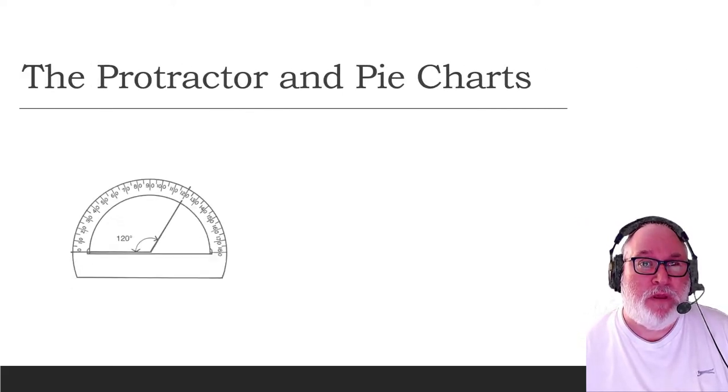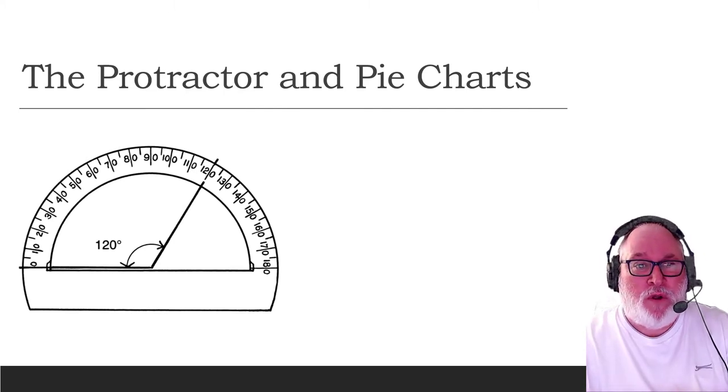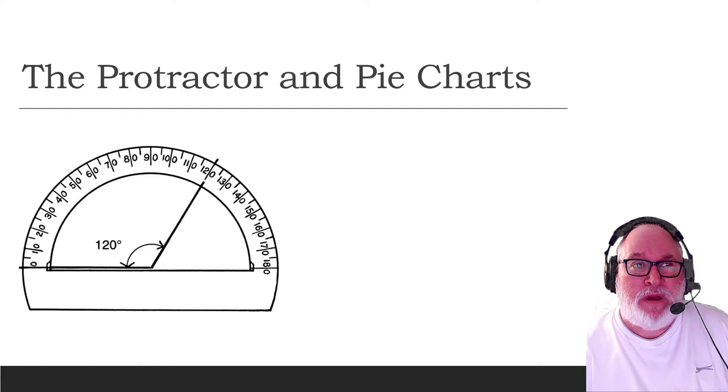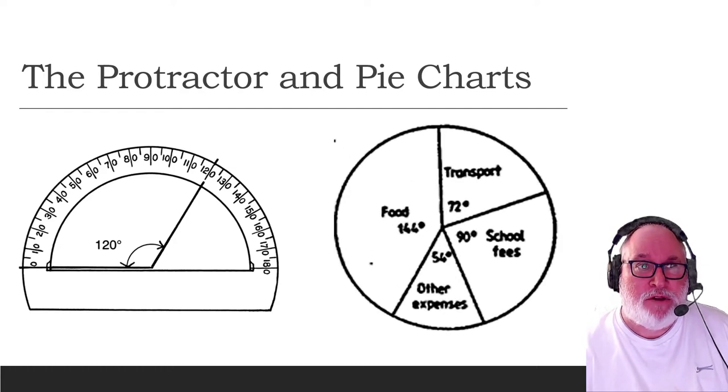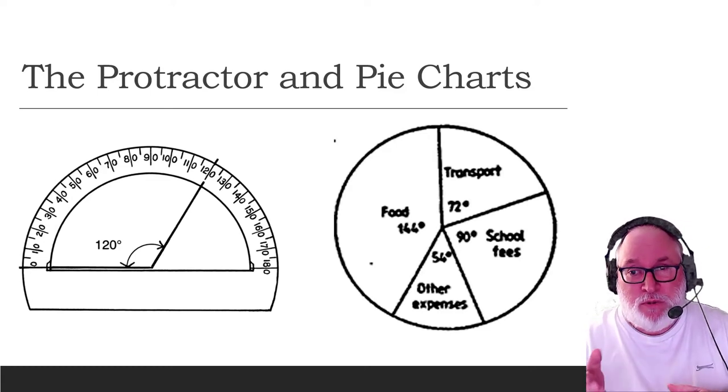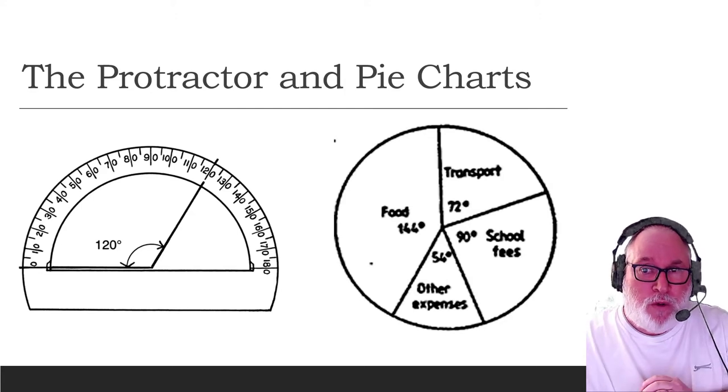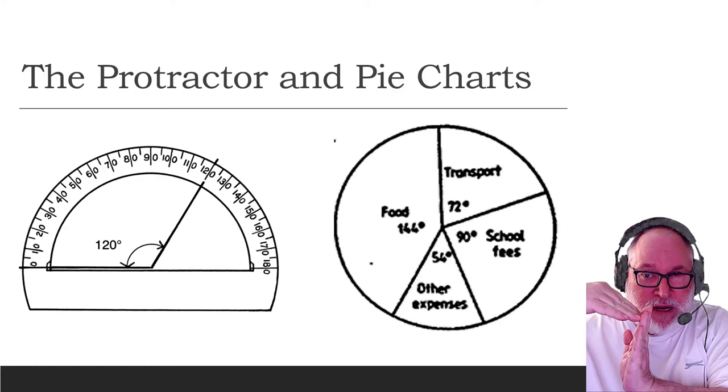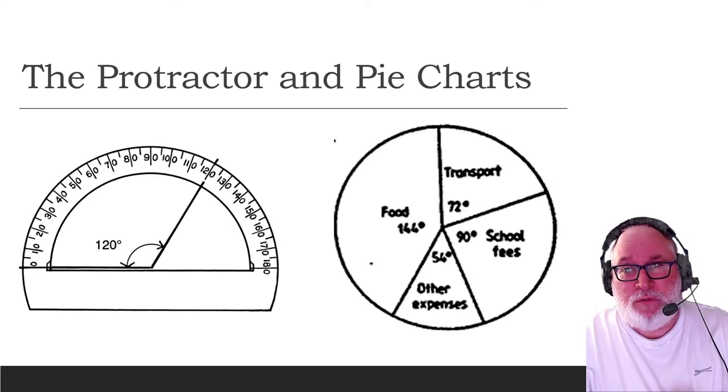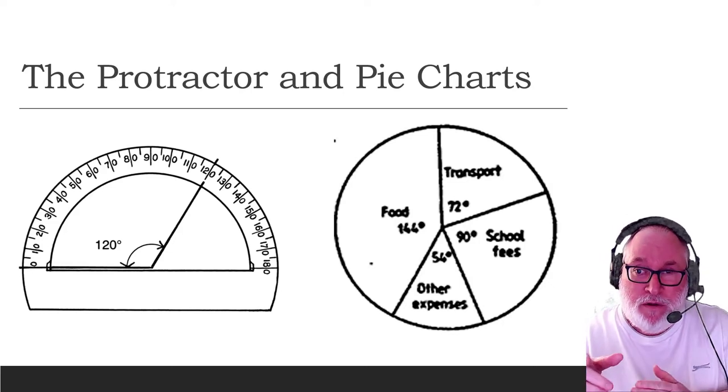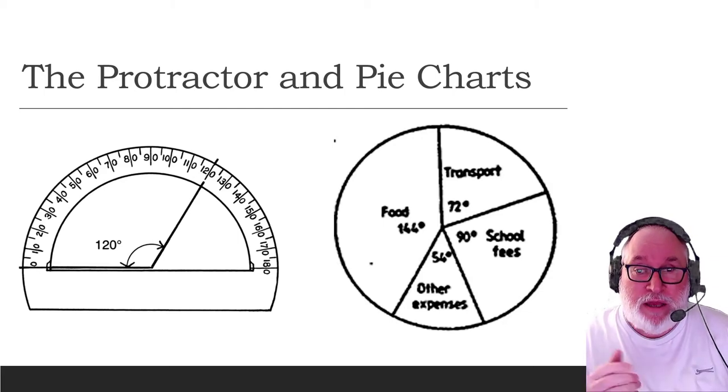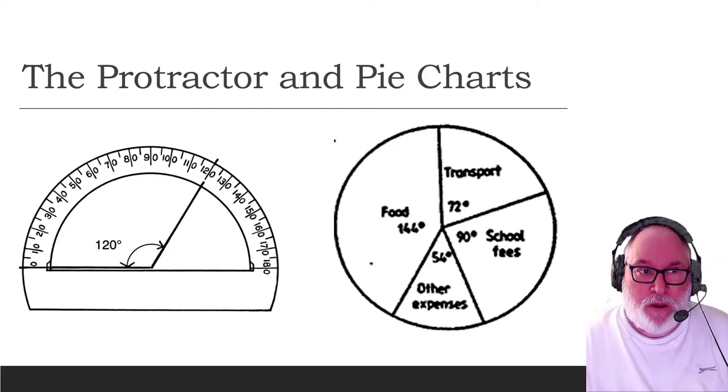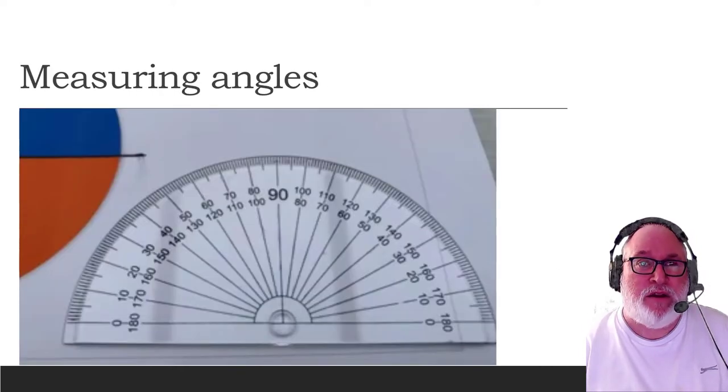So the protractor and how that works with pie charts. This one indicates here an angle of 120 degrees. Then we go up to 120 degrees, and it can be quite accurate if we're looking at it. So if we have a pie chart that's been provided to us and we work out the degrees.